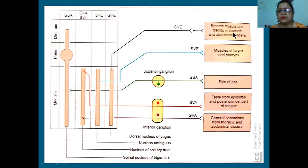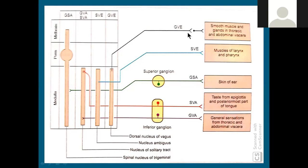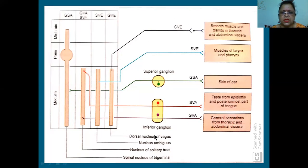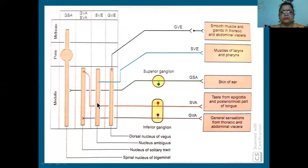Smooth muscles and glands of the thoracic and abdominal viscera are related to GVE, which is related to the dorsal nucleus of vagus. Then muscles of the larynx and pharynx - that is special visceral efferent. All the muscles are always supplied by this. Superior laryngeal will be supplying the cricothyroid muscle.